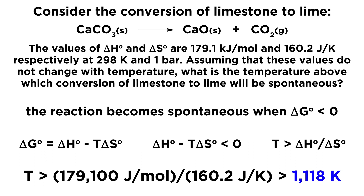Despite the enthalpy unfavorability — this is an endothermic reaction at 179.1 kilojoules per mole, which we typically expect to not be spontaneous — it is entropically favorable. We're producing more substances and producing a gas. Therefore, if we raise the temperature high enough, the T delta S term will outweigh the delta H term, and that happens at 1,118 kelvin. Above that temperature, this will be a spontaneous process.